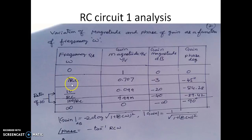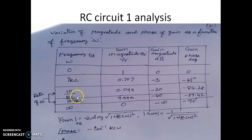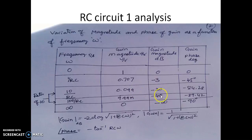Substituting ω = 10/RC and 100/RC gives further magnitudes, dB values, and phases. Observe that when the frequency is ω₁ = 1/RC and ω₂ = 10/RC — a ratio of 10 — the gain at ω₁ is −20 dB, and at 10·ω₁ it changes by −20 dB. So as the frequency increases by 10 times (one decade), the gain reduces by 20 dB. We call this slope −20 dB per decade, also called the roll-off — the rate at which the gain is falling.